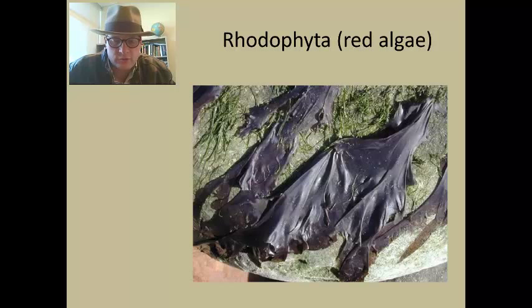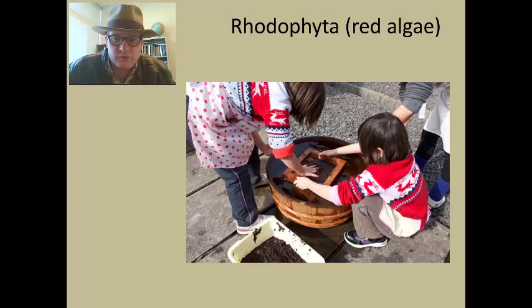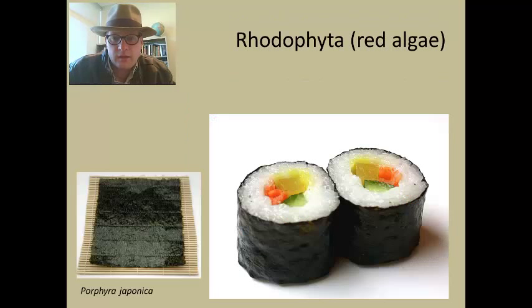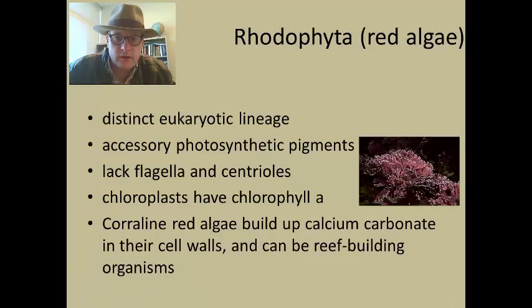Red algae are actually pretty important for human consumption. Here are some children in Japan making nori — algae that you can eat, used in wrapping sushi. Red algae is also often used in making agars that are used for bacterial cultures, composed of the very thick membranes of the cells of these eukaryotic organisms.